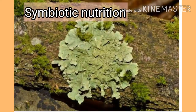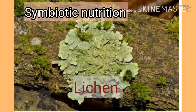Symbiotic nutrition. In some cases, two or more different types of plants live together to fulfill their needs of nutrition, protection, support, etc., with each other's help. This type of nutrition is called symbiotic nutrition. Lichen, as you can see in the picture, is an example of a symbiosis between algae and fungi.